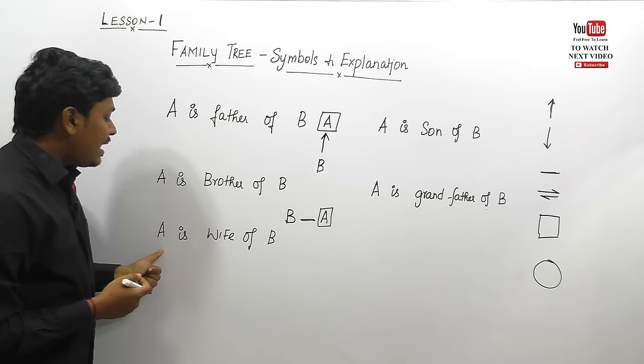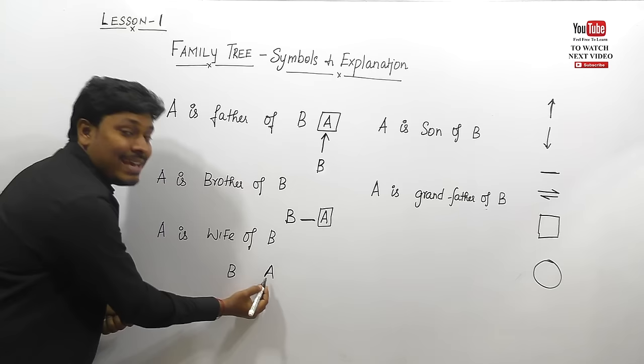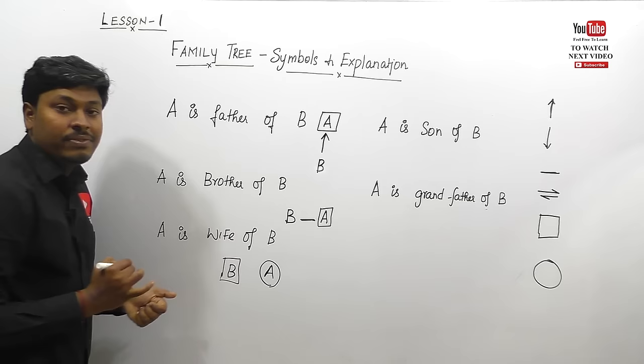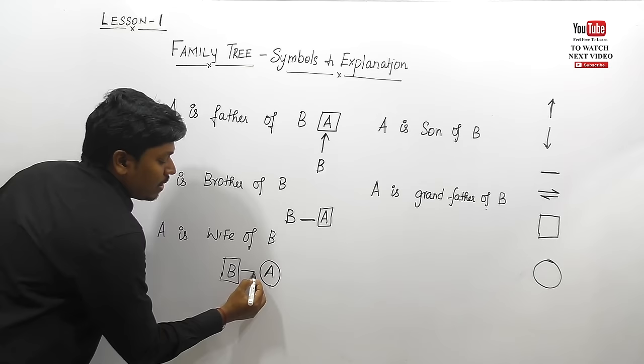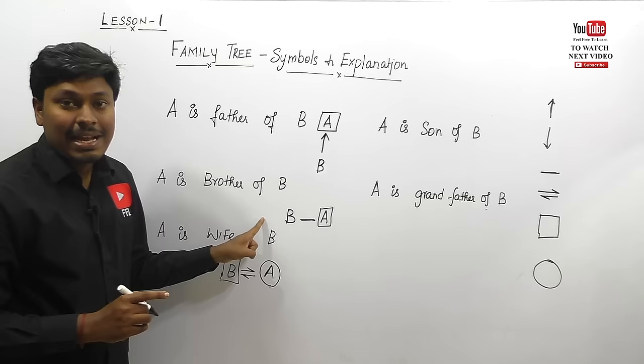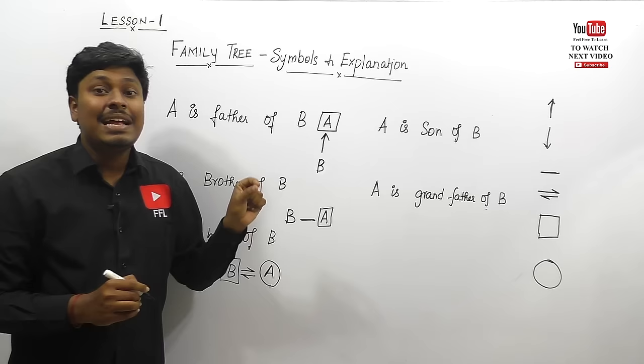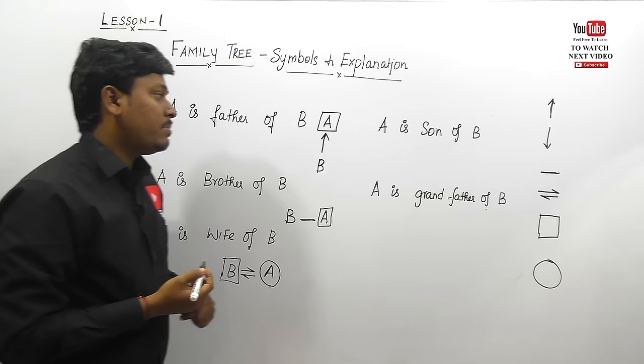A is wife of B. B is having a wife A. A is a wife, so A is female and B is male. Husband and wife is also zero generation, but this is denoted by a special symbol — not a plain line — though both are zero generation.